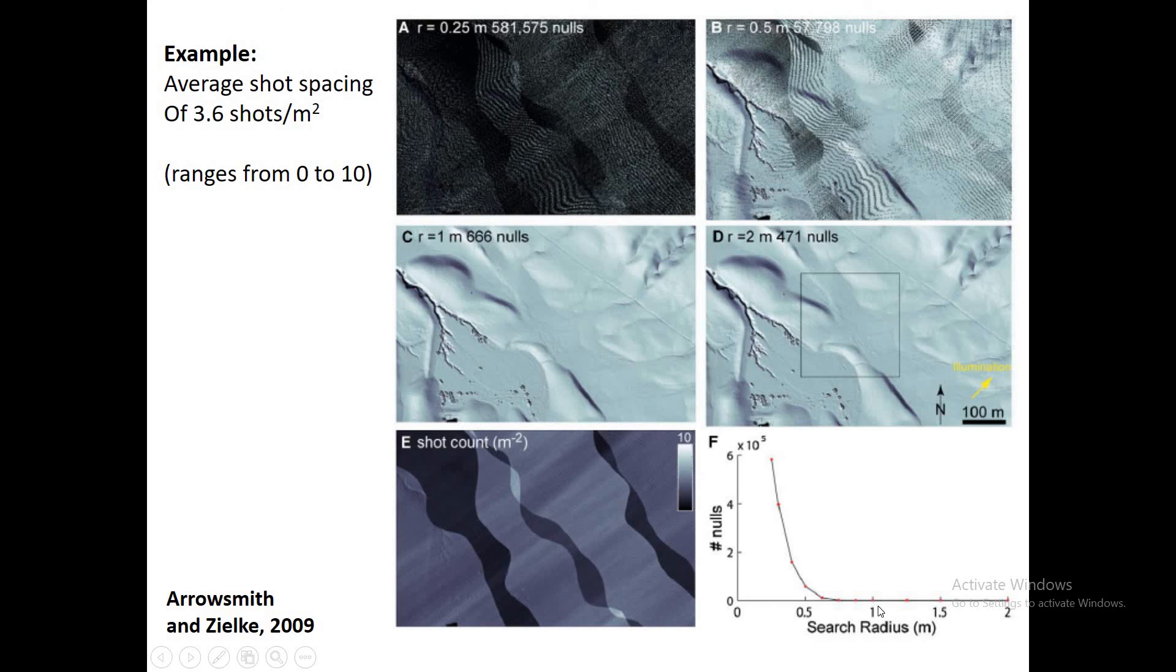The trade-off here is if you use a lower search radius, you can have a higher resolution DEM, a smaller pixel size. But if you make the search radius too small, then you start to get a lot of empty pixels that don't have a value in them.